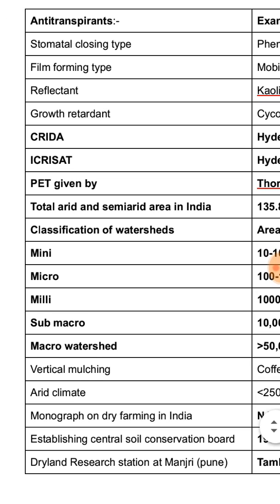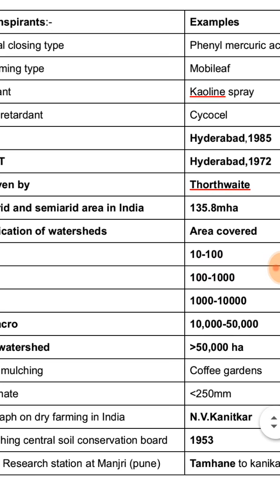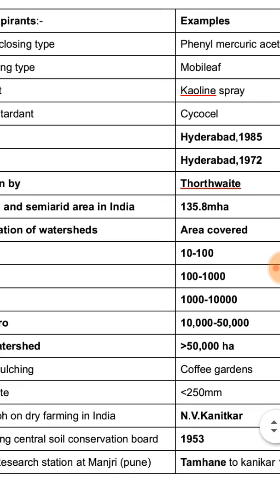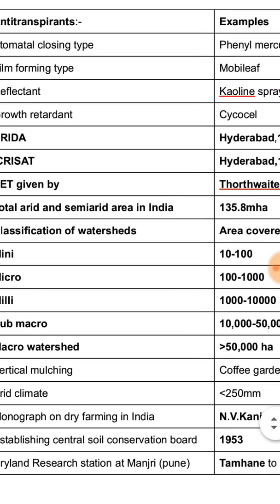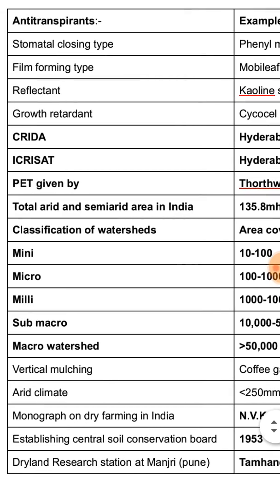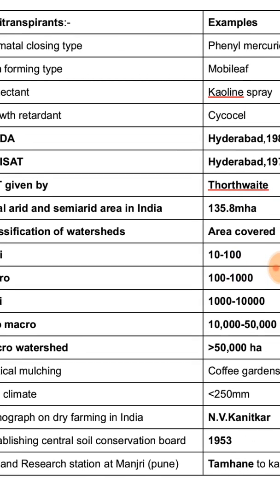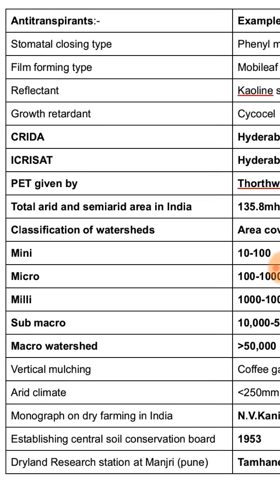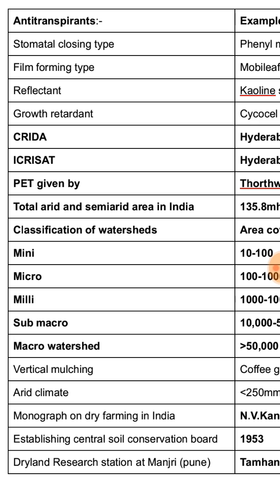Total arid and semi-arid area in India is 135.8 million hectares. Classification of watersheds: mini watershed is 10–100 hectares; micro watershed is 100–2,000 hectares; milli watershed is 1,000–10,000 hectares; sub-macro is 10,000–50,000 hectares; and macro watershed is more than 50,000 hectares.